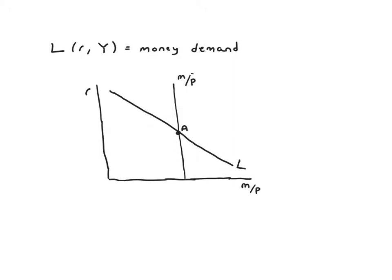And now what we want to do before moving on and thinking about deriving the LM based on this money market diagram is what's the basis for this money demand? Why do people want to hold money? Why does it slope down and more importantly what might shift it?